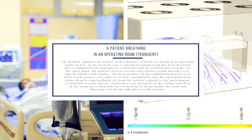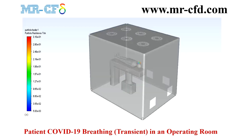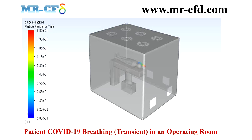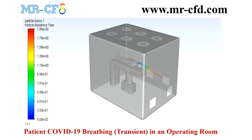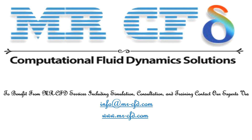The first project simulates the flow of respiratory air from the mouth of a COVID-19 patient hospitalized in a room equipped with a ventilation and air conditioning system. The main purpose is to allow fresh oxygen-carrying air to flow continuously into the room rather than expel polluted air from the patient's mouth into the environment. Ventilation systems and air conditioners are designed on the ceiling and floor, responsible for circulating fresh air and directing it out through side ports.